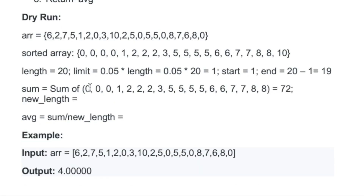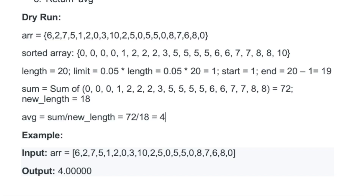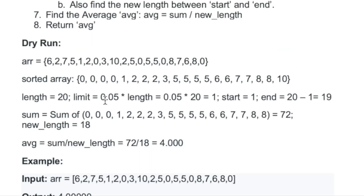The sum of all elements between those two intervals is 72. The new length is the count of elements between start and end — we declare a new length variable, initialize it to zero, and increment it by one for each iteration. After the for loop, the new length is 18. Now we calculate the average by dividing sum by new length: 72 / 18 = 4.00, which is a double value.